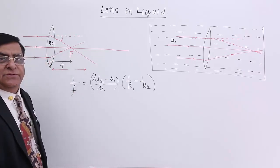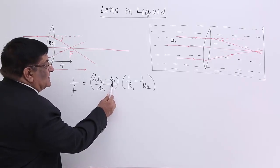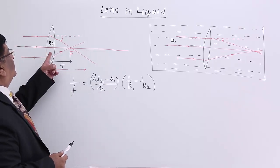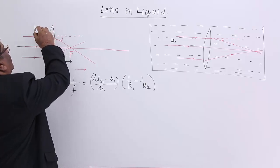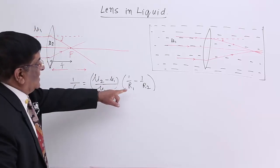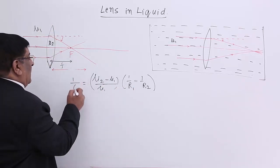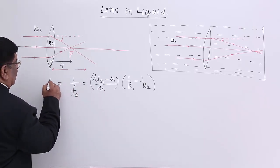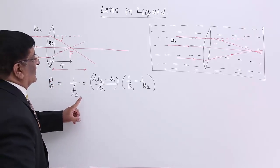This formula says mu1 is the medium outside the lens and mu2 is the medium inside the lens. This is the radius of curvature of surface 1, this is the radius of curvature of surface 2, and this is the focal length. Now we place it in the air, so this gives us the power in the air. Power of the lens in the air is 1 upon focal length in air.